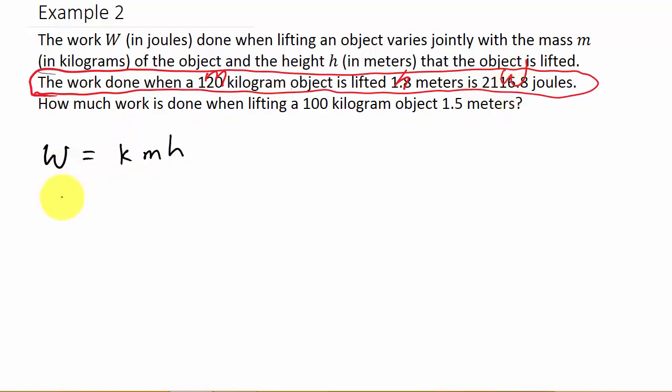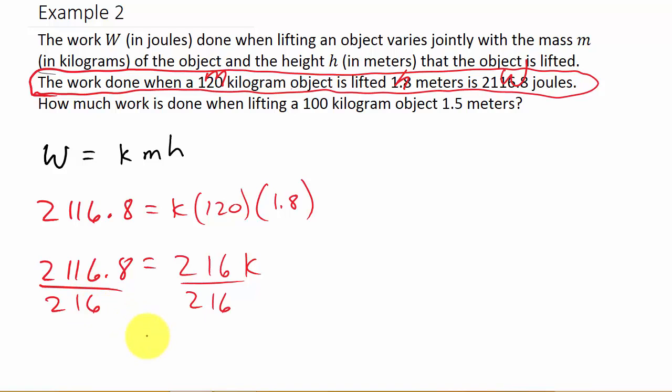Alright, so w is 2,116.8 equals k times m, which is 120, times h, which is 1.8. Alright, so we get 2,116.8 is equal to, so I'm going to go ahead and multiply these in my calculator. So that's 216k. And then I divide both sides by 216. And I get k is 9.8.